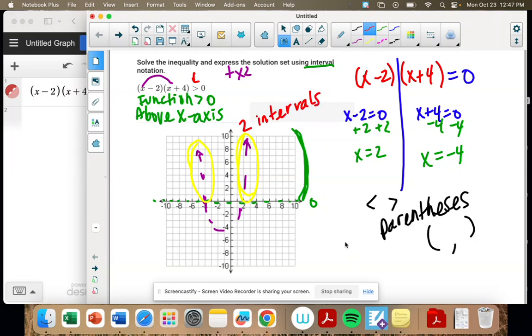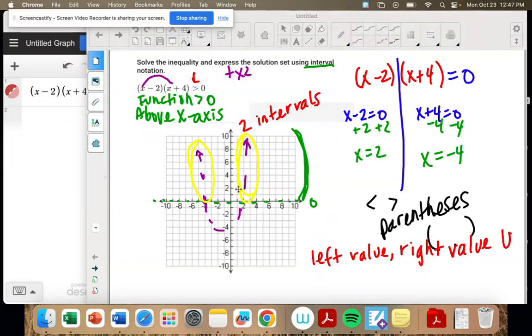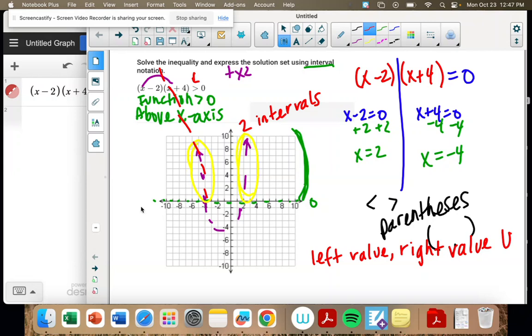So remember interval notation, we go left value, right value. And we're going to have two intervals that we join with a union sign. So how far left does this line go? Forever. Negative infinity. And then it ends right here. This is why we needed to know this value at negative 4.